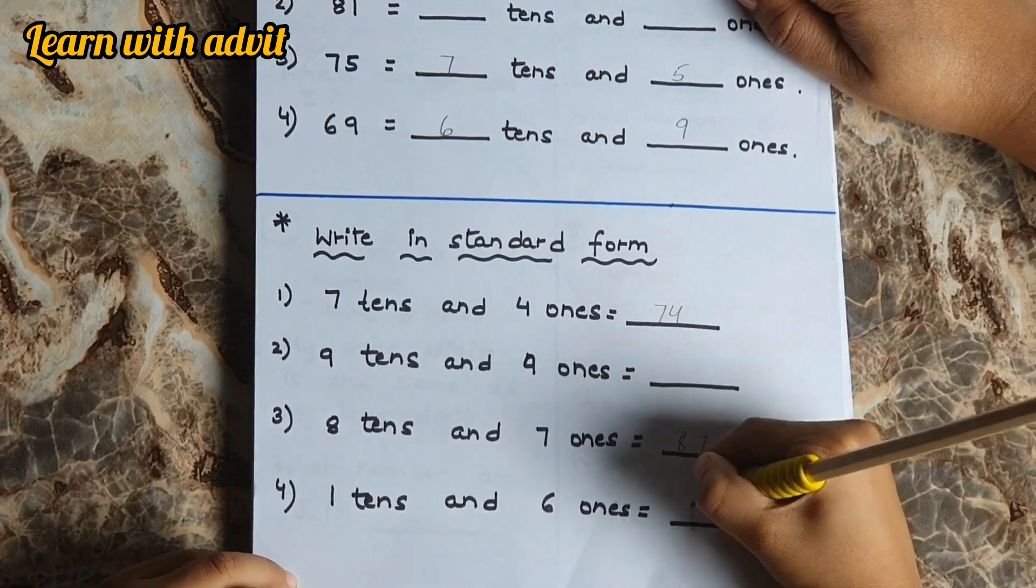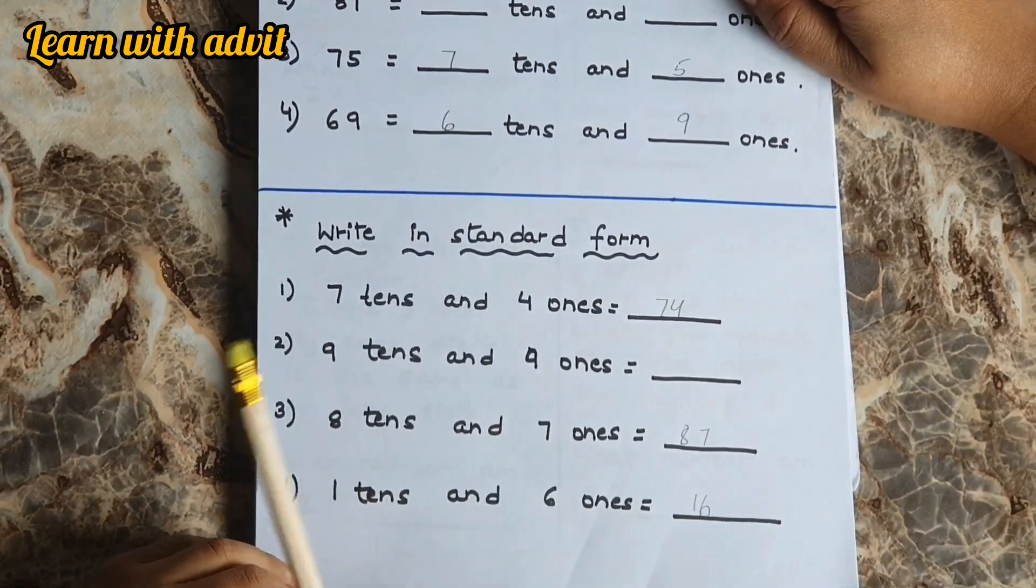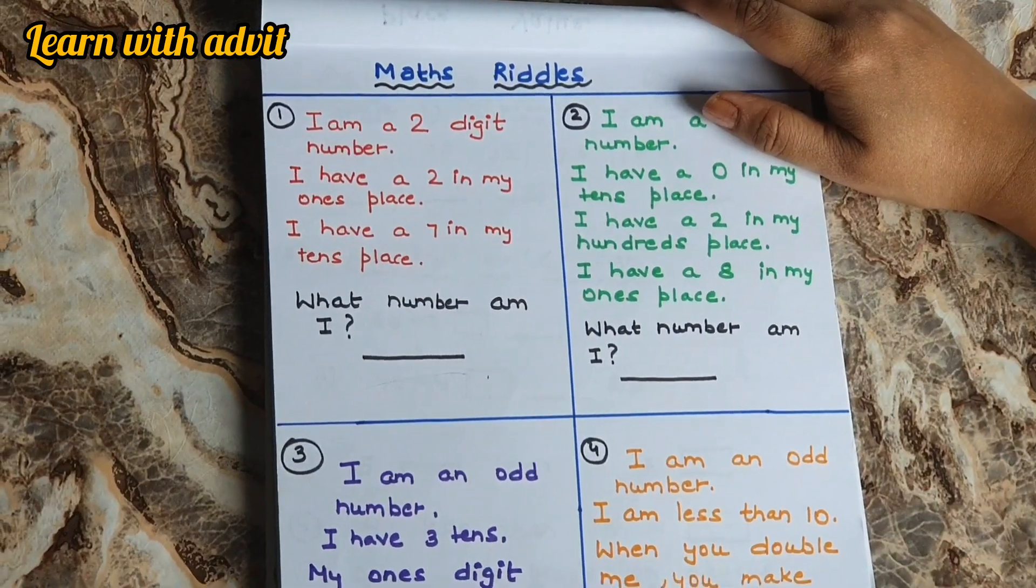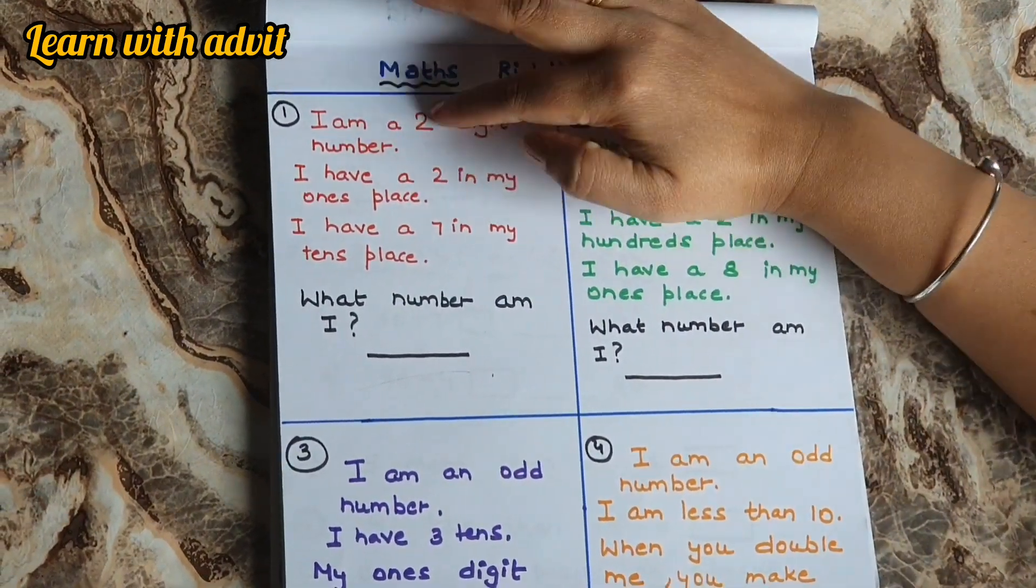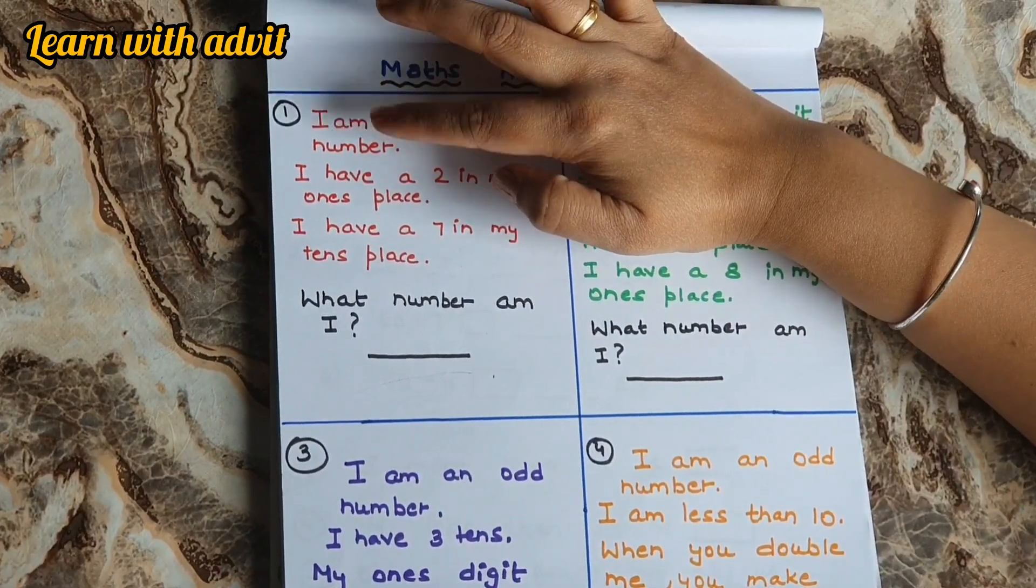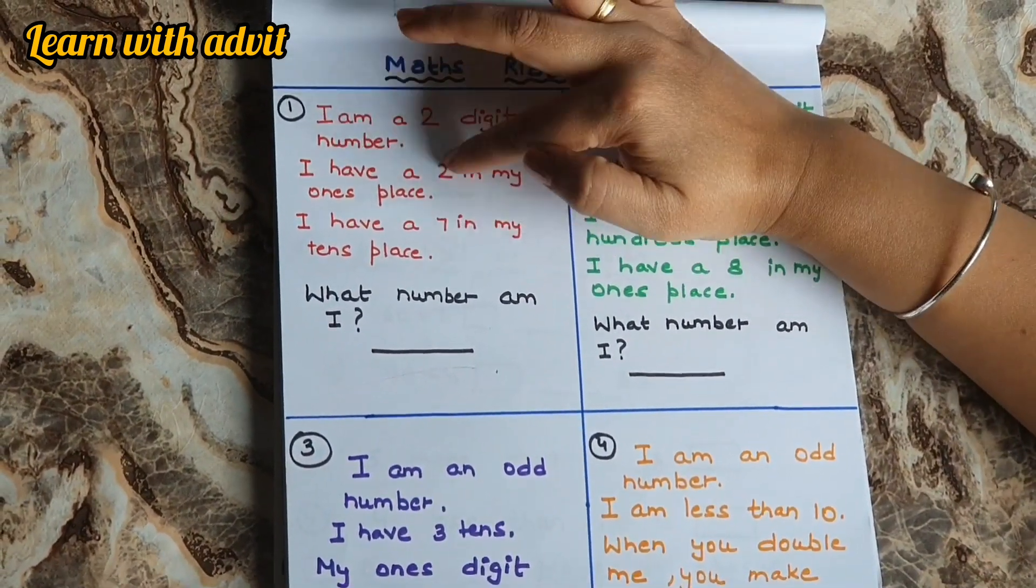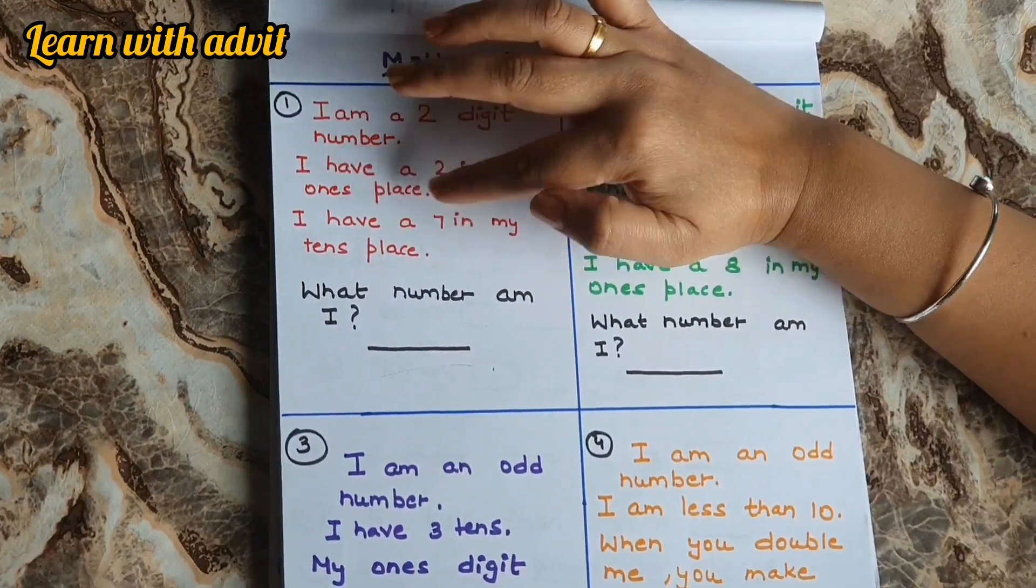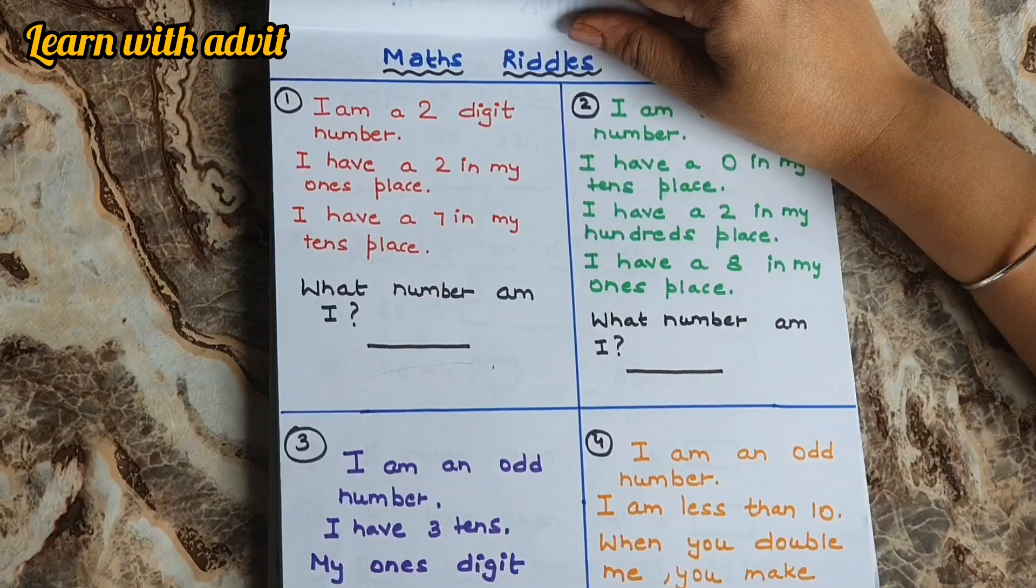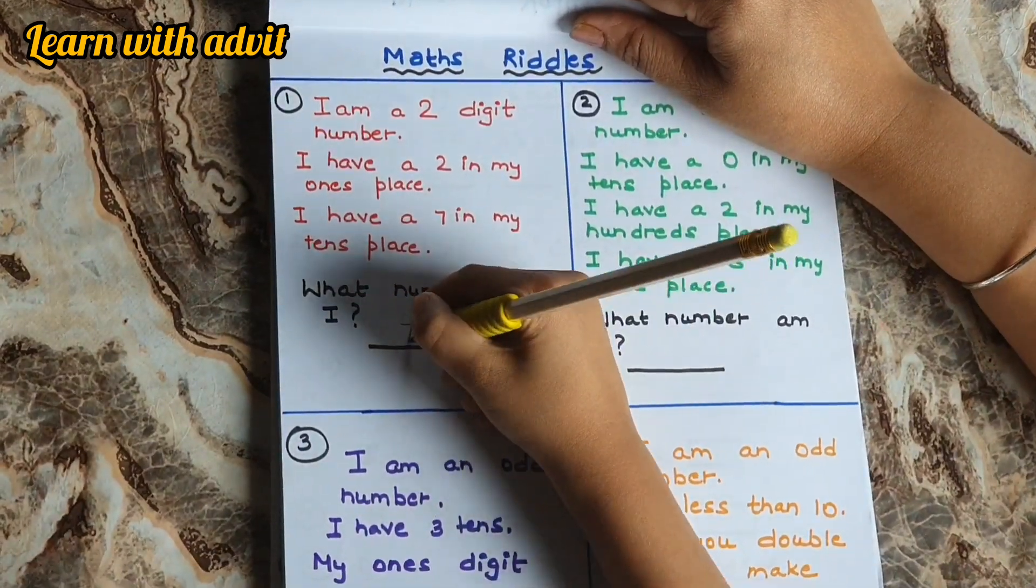So this is your favorite one, right? Read: I am a two-digit number. That means tens and ones. I have 2 in my ones place and I have 7 in my tens place. What number am I? 72. Very good.